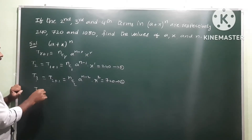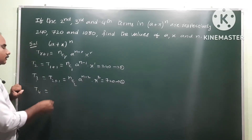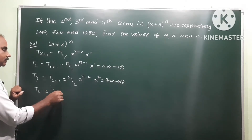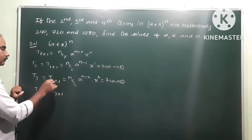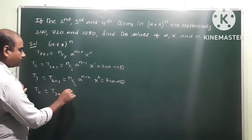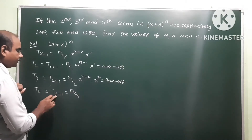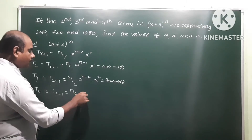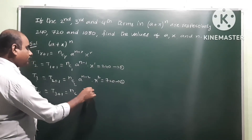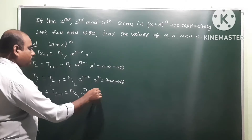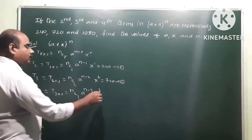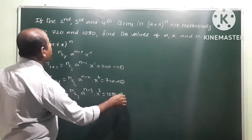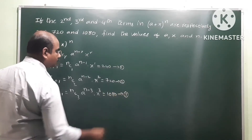Next, the fourth term T4 is T(3+1), so r = 3. Therefore nC3 · a^(n−3) · x^3 = 1080. That is equation number 3.